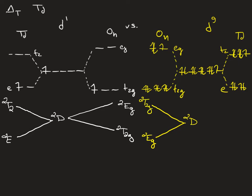As you increase delta T for a tetrahedral compound, those states split, but now the doublet T2 term is lower in energy than the doublet E term.